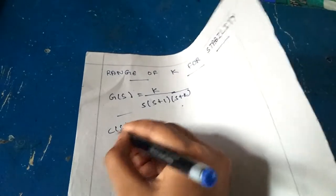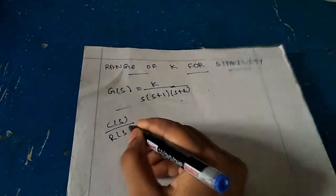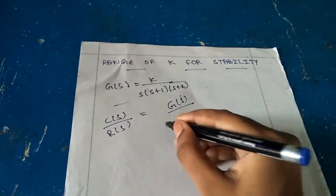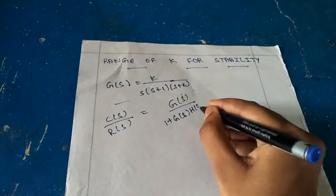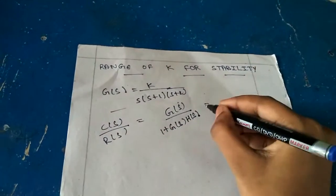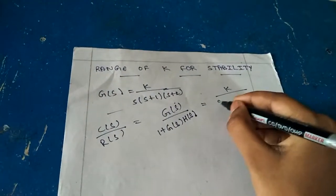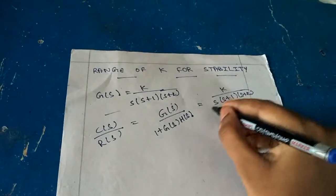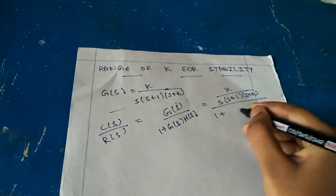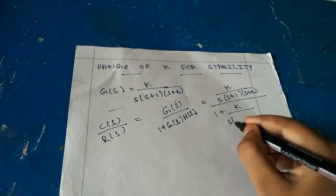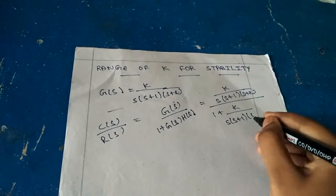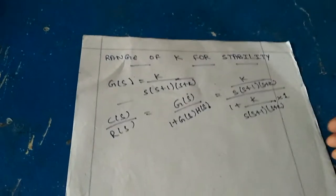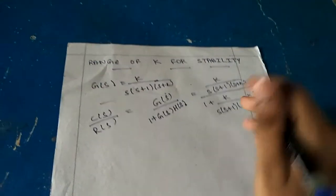First we have to find the system transfer function C(s)/R(s) equals G(s) divided by 1 plus G(s)H(s). G(s) is k divided by s(s+1)(s+2), divided by 1 plus k divided by s(s+1)(s+2). H(s) is our feedback, which we are given in the question as unity feedback, so it is 1.